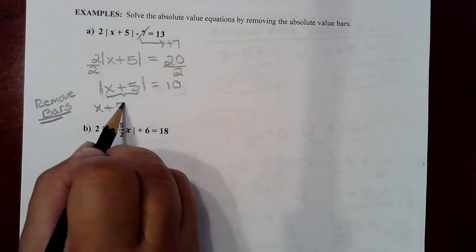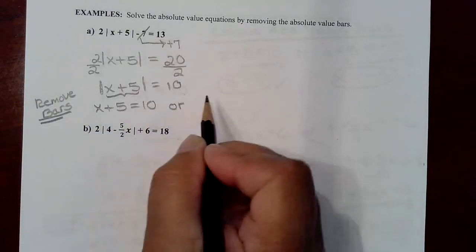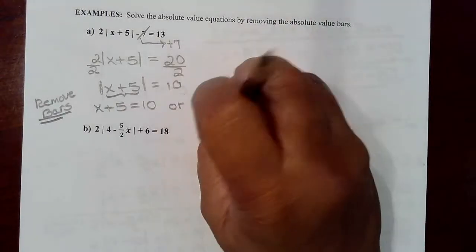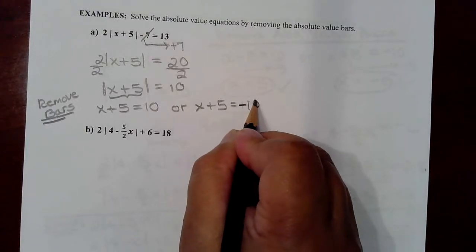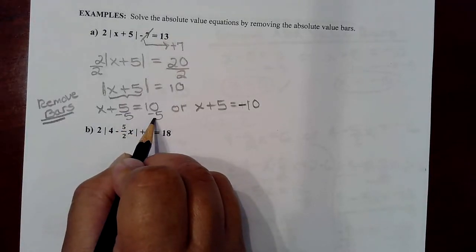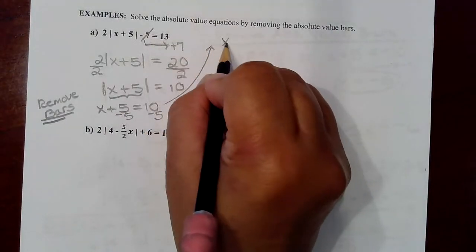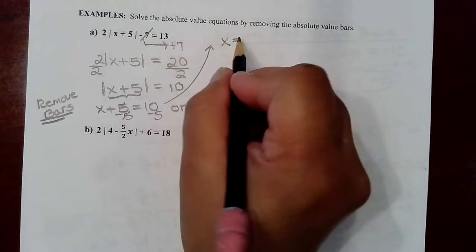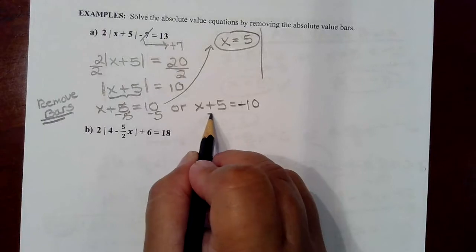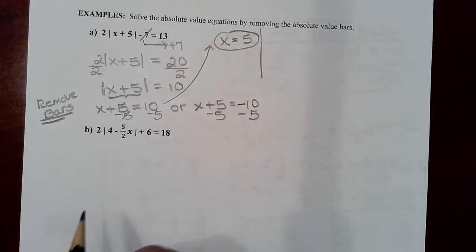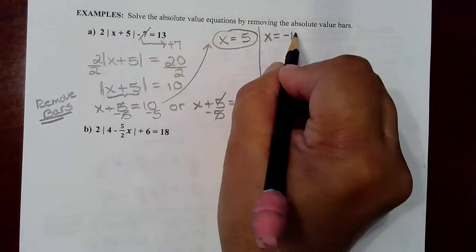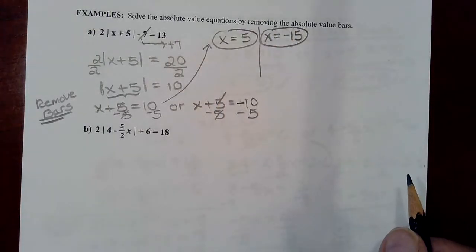That gives us the right to remove the bars by saying the expression inside could equal 10 or negative 10 and still satisfy the equation. Then we solve each branch. Solving the first one, we subtract 5 from each side and get x = 5. Solving the other, x + 5 = -10, we subtract 5 from each side and get x = -15. Those are the two solutions.